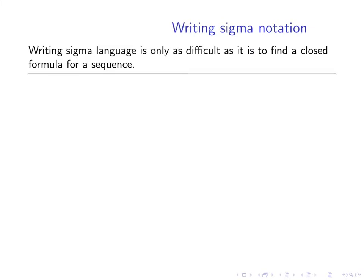On the other hand, writing sigma notation can be difficult because, as we've seen in the earlier part of this section, sometimes it's hard to find a formula for a sequence of terms. So the hardest part about writing sigma notation is that we need to be able to do exactly the same process we've been doing in section 1.2 in finding a closed formula.